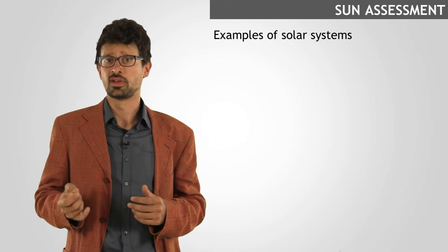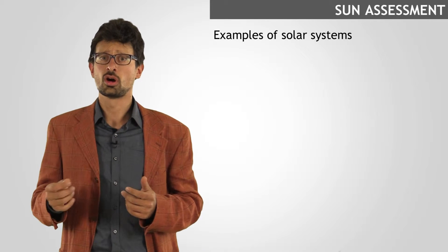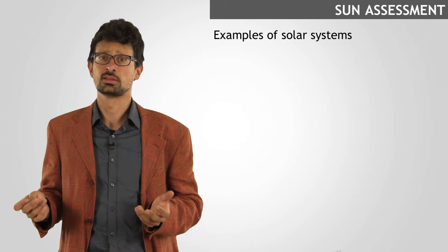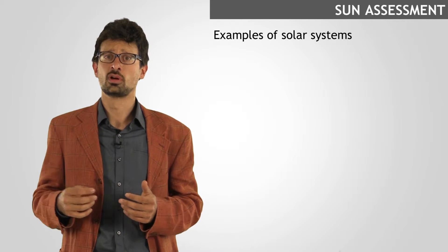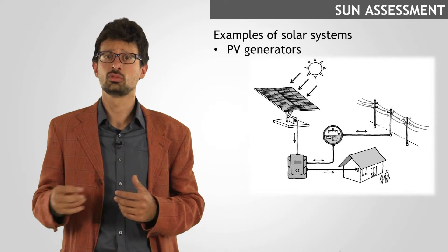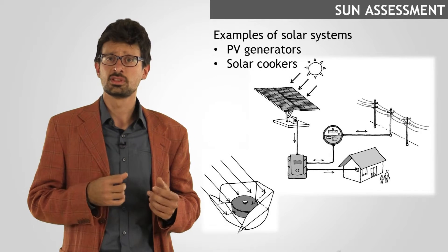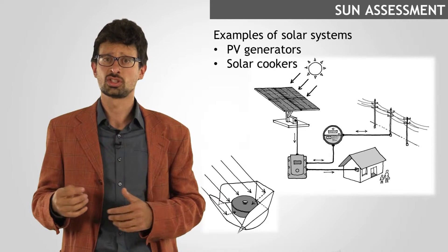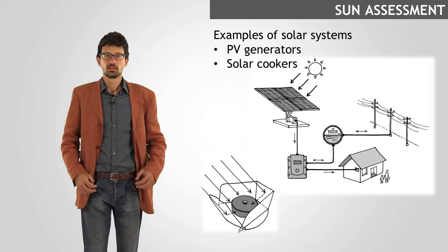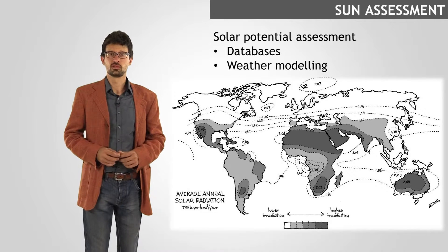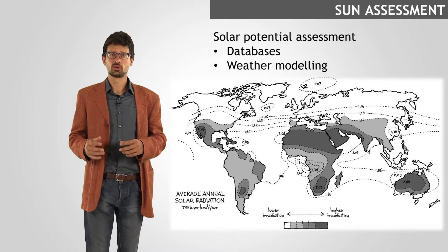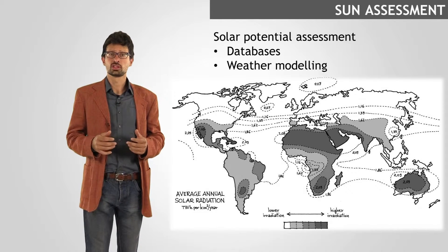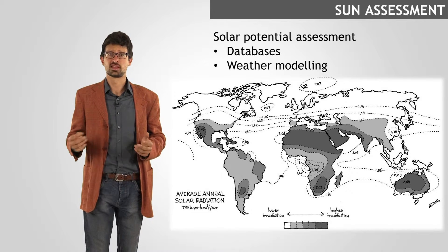As per other renewable sources of energy, sun is the most common and easy to be assessed. Solar radiation can be successfully used for photovoltaic systems to generate electricity, or by systems directly using thermal energy, such as solar cookers. In both cases, the assessment of solar radiation is easily performed thanks to the consultation of online databases and maps, like the one you can see in the figure, or using data from weather forecast centers.